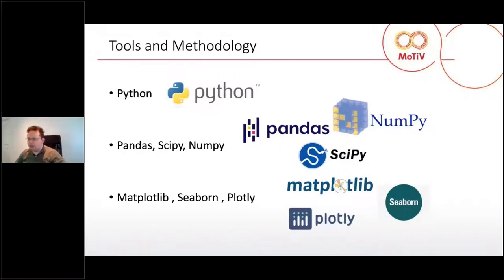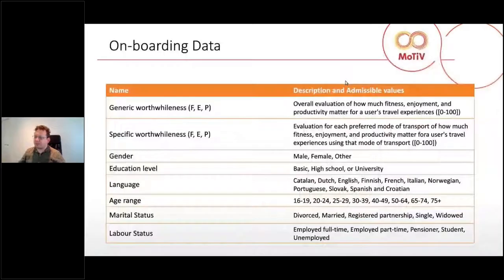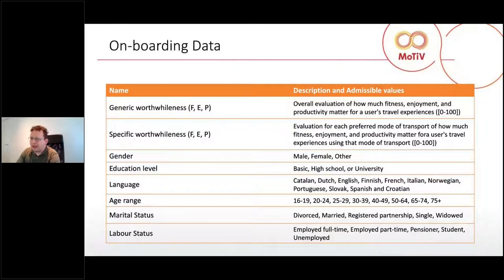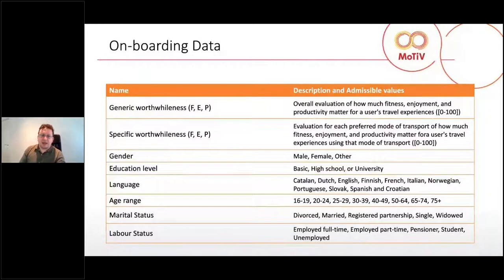For visualization and plots, we use Matplotlib, Seaborn, and Plotly. These are all very well-known tools used in data science and are increasingly used in various disciplines because they are very flexible and powerful. Now let's go to the data of the Motiv project. We have data collected during the onboarding phase — when the user registers their account on the application, they are asked to rate which are their favorite transport modes, giving a score about three dimensions: fitness, enjoyment, and productivity. We call these generic world-wide elements.